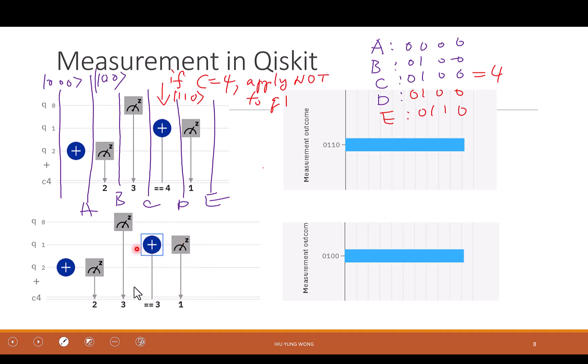Now this one will be different. Why? I won't go into detail. Everything is the same, except what? Except I say, if the classical register is 3, I apply the NOT gate. But is that 3? No. We just go through this process. It is 4. So this is not applied. So as a result, at this stage, you still have 1, 0, 0. And then when you do the measurement, you get the D state, 0, 1, 0, 0.